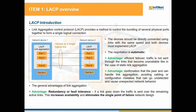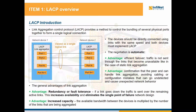Besides the benefits of using automatic link aggregation establishment, let's review also the general benefits of link aggregation. By using link aggregation, you'll benefit of redundancy or fault tolerance. When a link goes down, traffic will be sent over the remaining active links. This increases availability and eliminates the single point of failure from your network design. Another benefit, which is quite obvious but very important, is that link aggregation increases the capacity. The amount of available bandwidth between the devices is multiplied by the number of the links that are being aggregated.